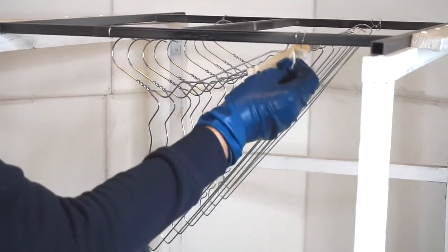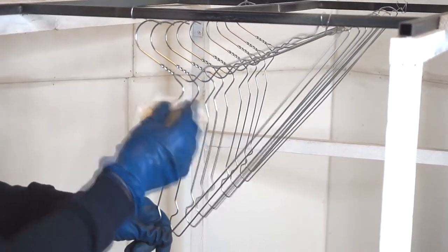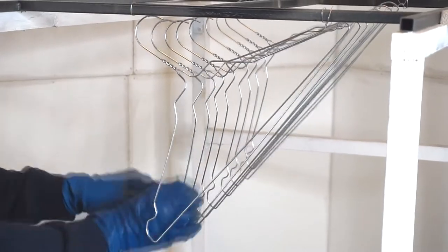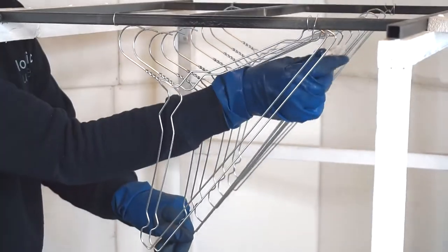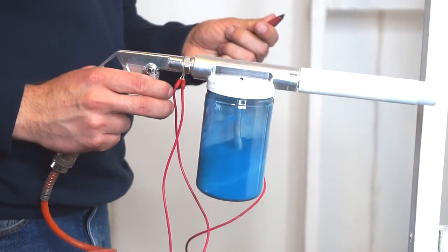Next, as usual, I will degrease all these hangers and will start powder coating. The powder I will use is a Capri balloon.